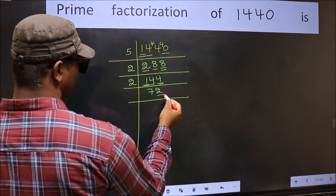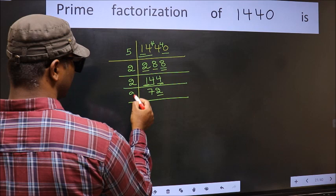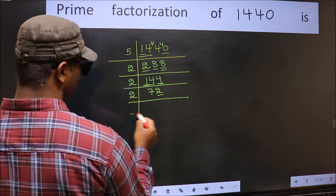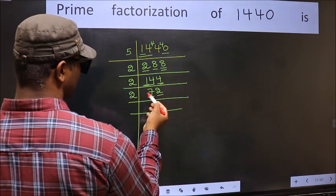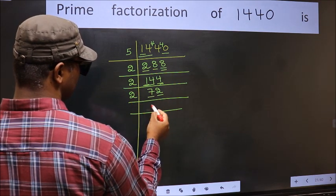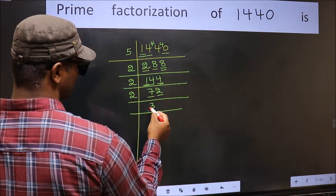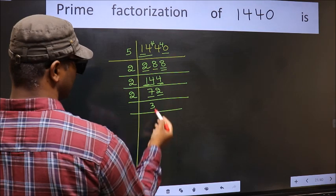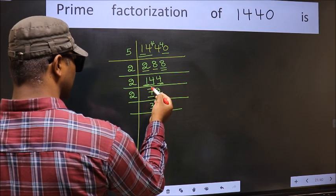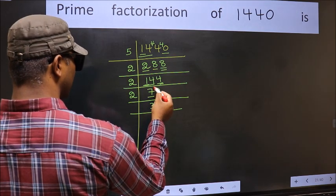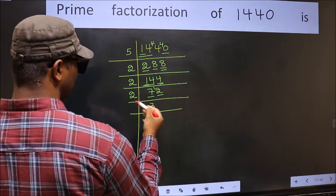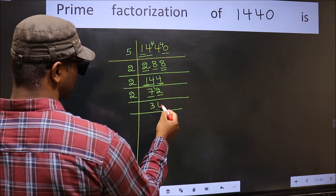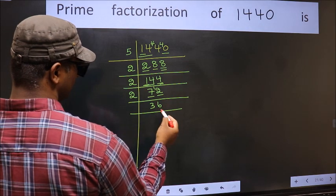Now the last digit 2 is even, so take 2. The first number is 7. A number close to 7 in the 2 table is 2×3=6. 7 minus 6 is 1; carry forward to get 12. When do we get 12 in the 2 table? 2×6=12.